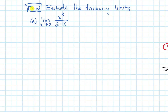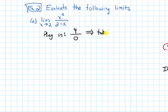Alright, so let's look at an example — this is example two. In part a, let's evaluate the limit as x approaches two of x squared over two minus x. Remember that the first step is we always plug in. If we plug two in on the top, we get four, because two squared is four. On the bottom we get zero. So we have a non-zero over zero, which means we now take the one-sided limits.